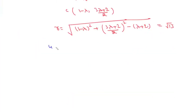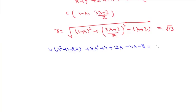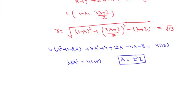Squaring the radius equation: (1 − λ)² + ((3λ + 2)/2)² − (λ + 2) = 13. Expanding gives 13λ² = 4 × 13, so λ² = 4, meaning λ = +2 or λ = −2.